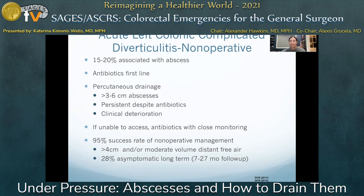Adjunctive percutaneous drainage can be performed if the abscess is large — usually greater than 3 to 6 centimeters, with some guidelines stating greater than 4 centimeters — if the abscess persists after a reasonable length of antibiotic therapy, or in the case of clinical deterioration. Percutaneous drainage can be performed provided there is a safe window and the contents are homogeneous. If not, antibiotics with close monitoring and interval imaging is acceptable.